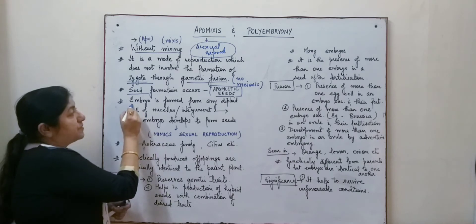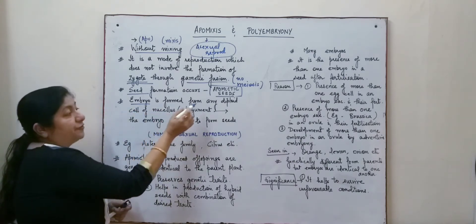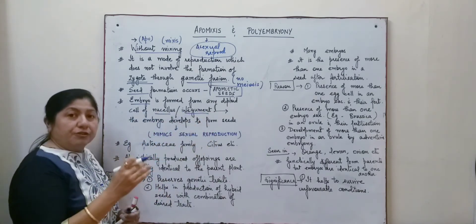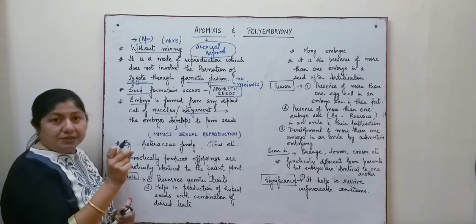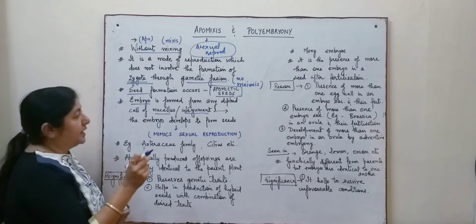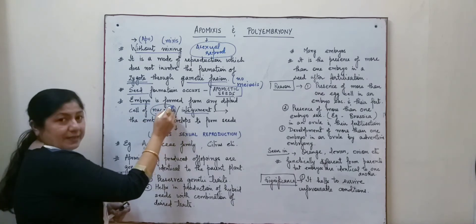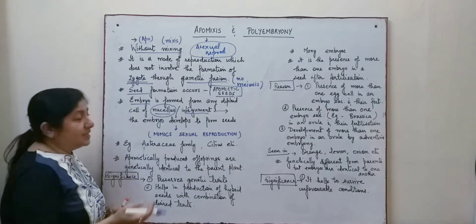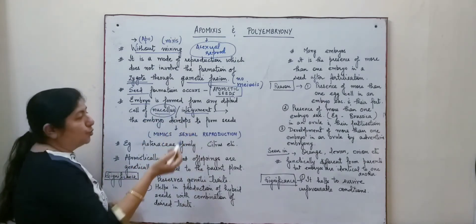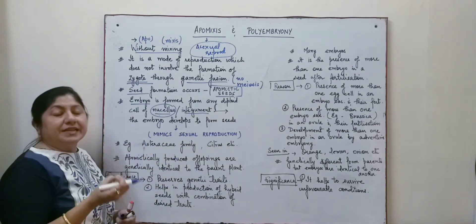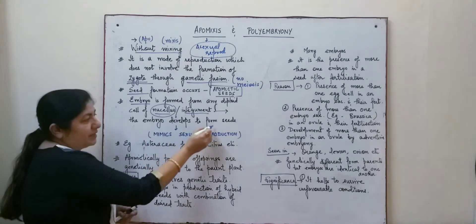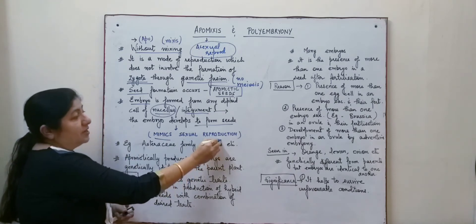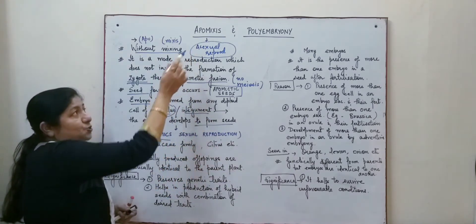The embryo which is being formed is obtained from any diploid cell of the nucellus or integument. If you recall the embryo sac of the plant — that is the female gametophyte — the nucellus is composed of diploid cells, and the integument is also made up of diploid cells. One of these cells then develops as an embryo and forms the seeds. So it is actually mimicking sexual reproduction and is therefore an asexual reproduction.